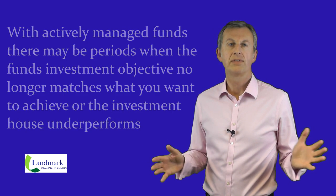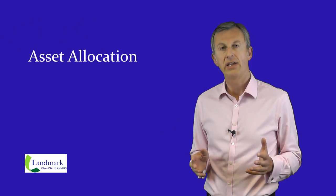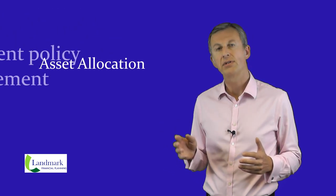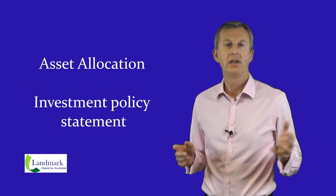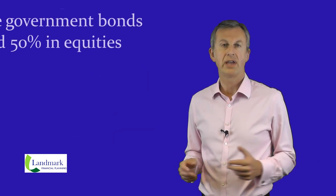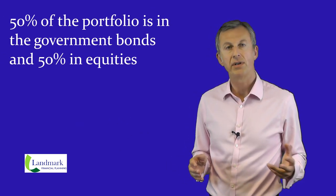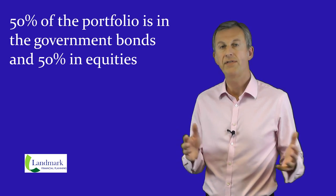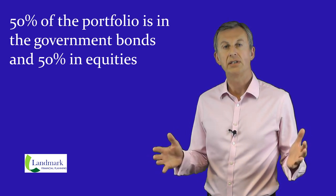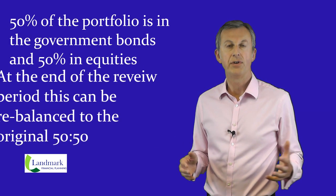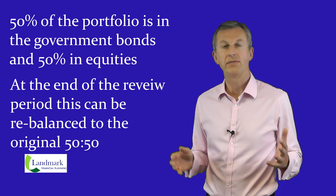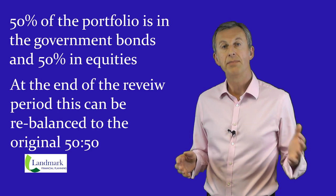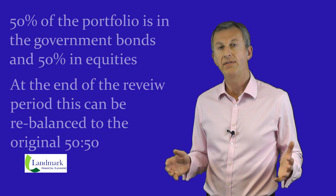As part of our review, it's important to establish an asset allocation and investment policy statement at the start of the investment process. This may be as simple as saying 50% of the portfolio is in government bonds and 50% in equities. At the end of the review period, if one of the assets is now at a higher percentage of the portfolio, it can be balanced back to the original 50-50.